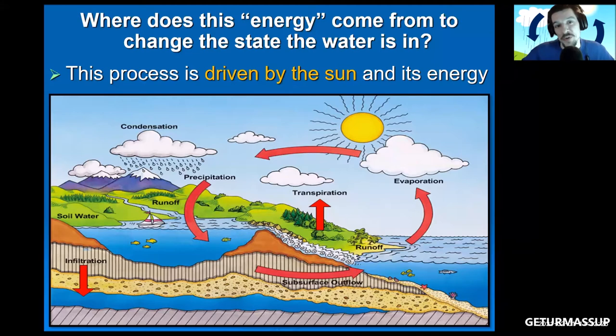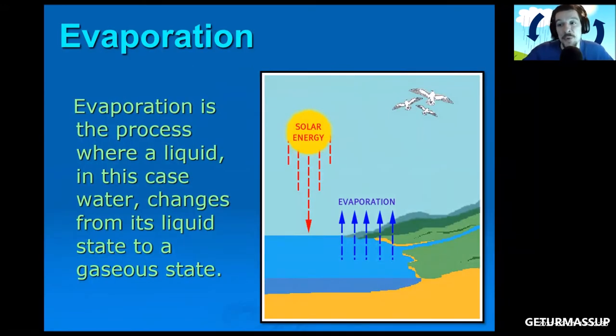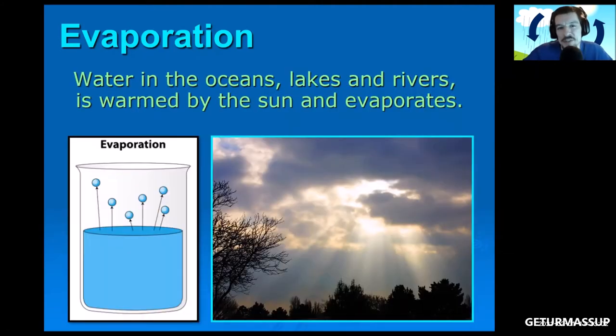Let's talk about the very first part of the water cycle - evaporation. In your notes, it says evaporation is the process where a liquid, in this case water, changes from its liquid state to a gaseous state. And sure enough, in the image we see the solar energy from the sun evaporating the water. Now you can't see evaporation, it's kind of like an invisible magic, but I'm going to try to show you an image that's going to give you an idea of what's happening when things evaporate.